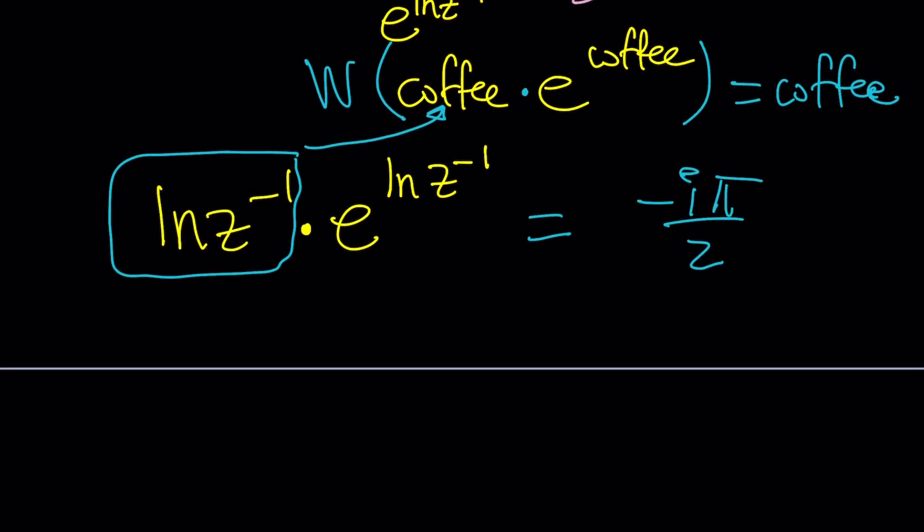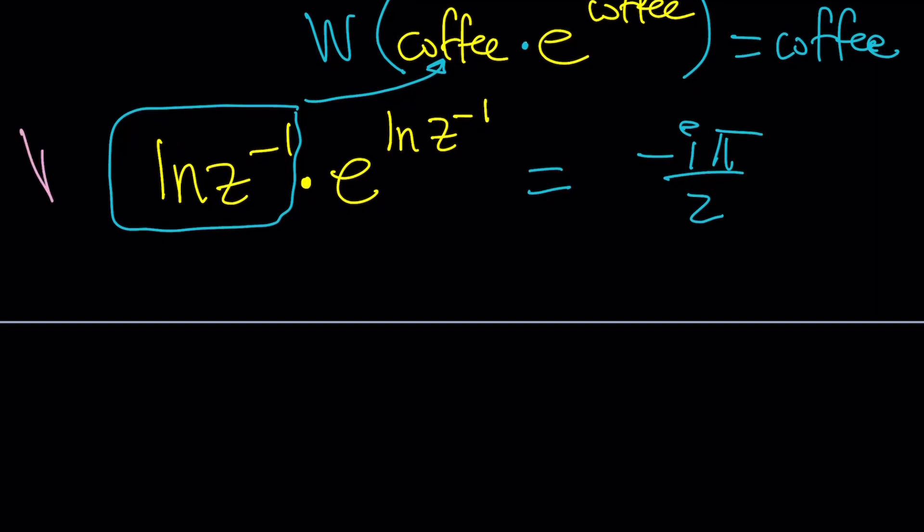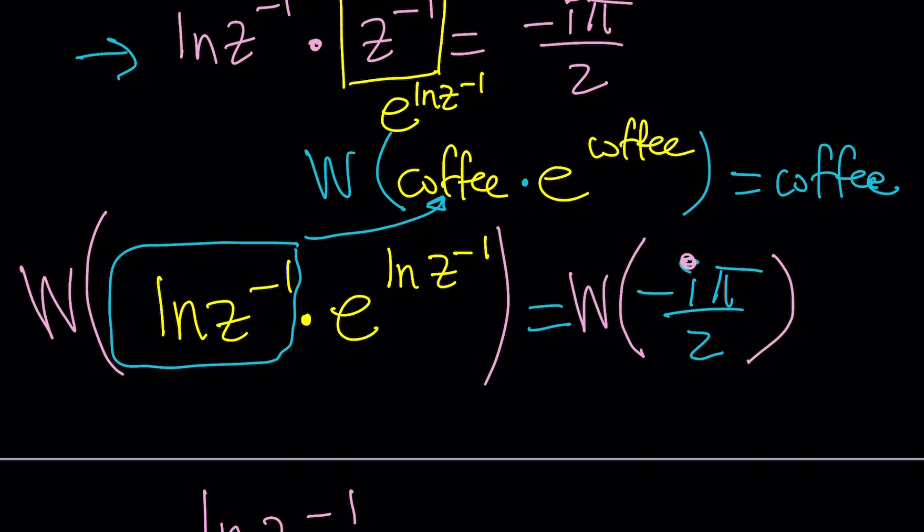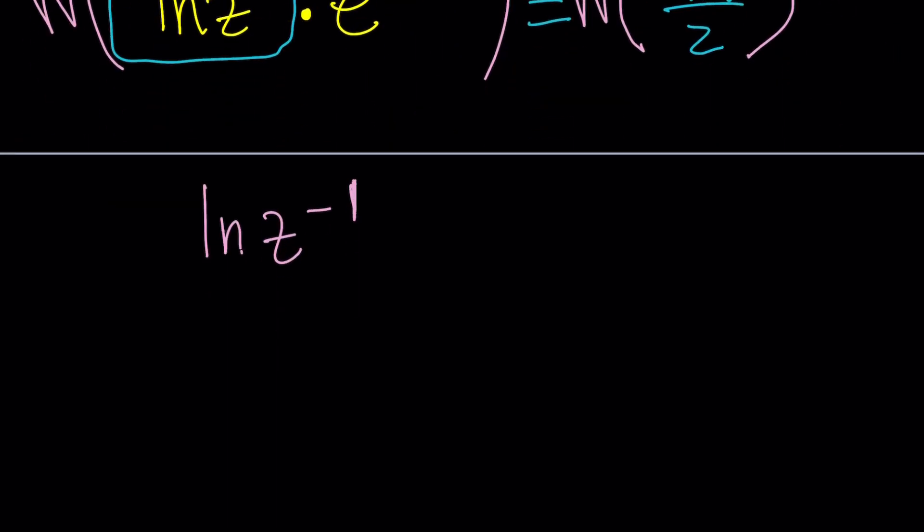So now if you apply Lambert's W function on both sides, and we still have negative i pi over 2 on the right hand side so we still have to consider that. Notice I keep it simple by using pi over 2. You're going to be getting ln z to the power negative 1 from the left hand side because that's your coffee. Now this is a constant. Obviously it has infinitely many values if you consider the analytic continuation of the function. Anyways some crazy stuff. But let's just stick to this value for now.